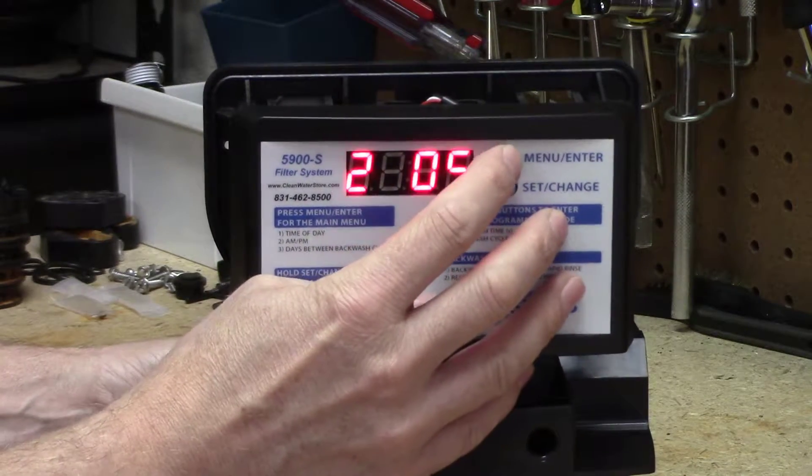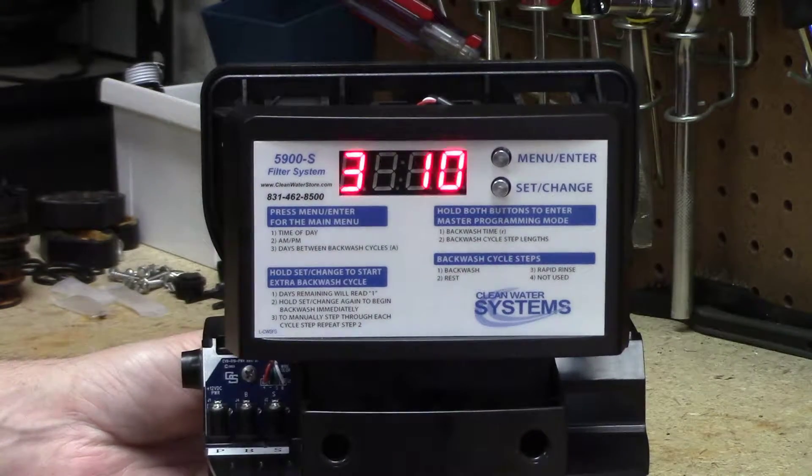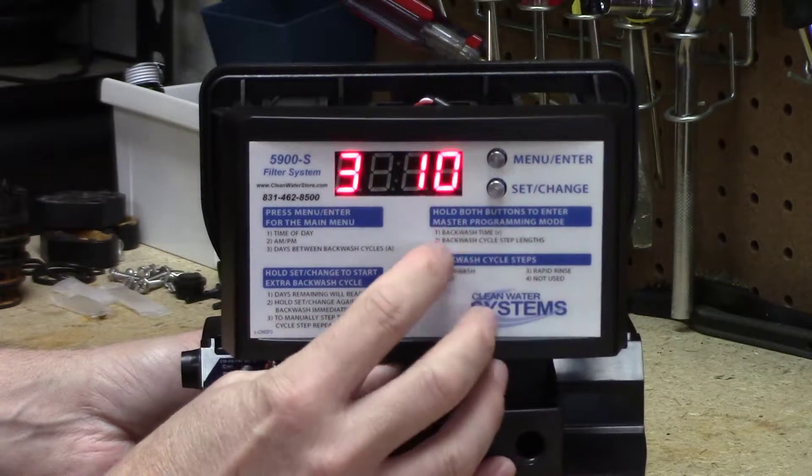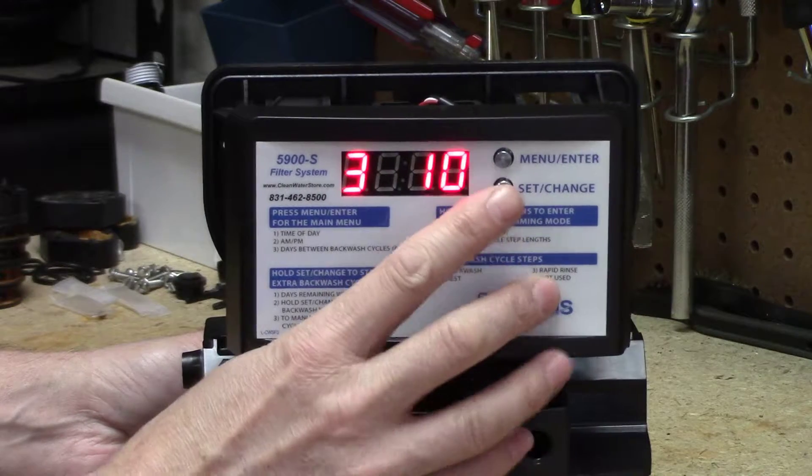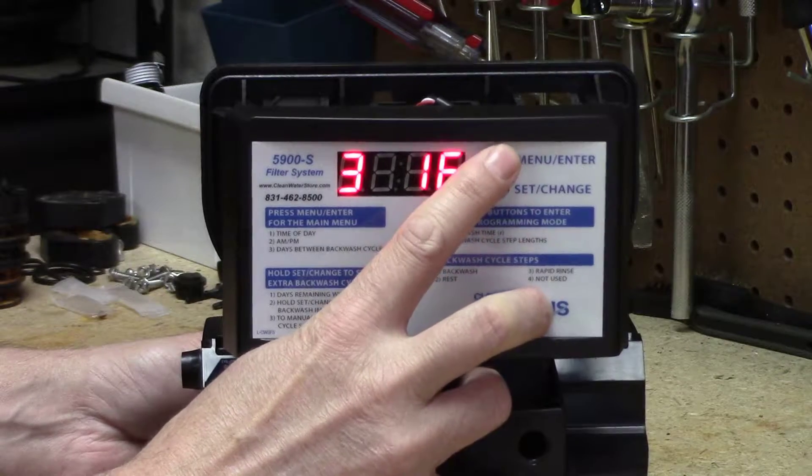And then we go to the third and final cycle, which is rapid rinse. We don't need 10 minutes on it. We only need six. So I'll press the set change button, and now just the ones place is flashing. Press the set change button again until we get to the number six, and then we've got the six. Menu enter.